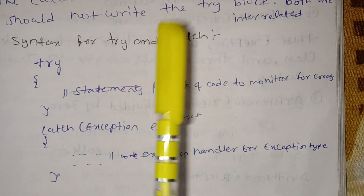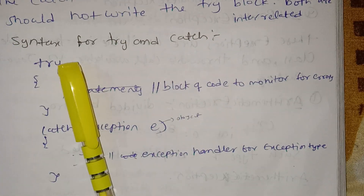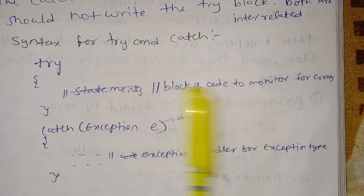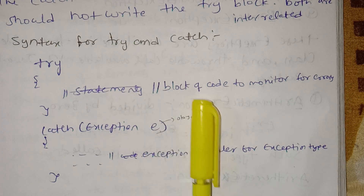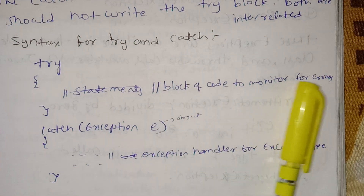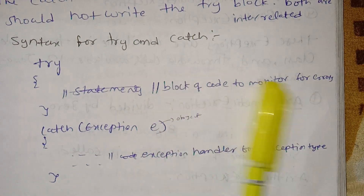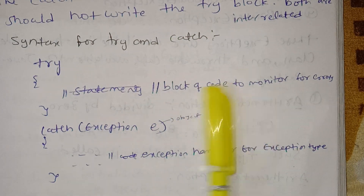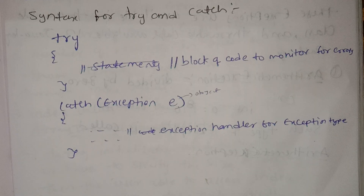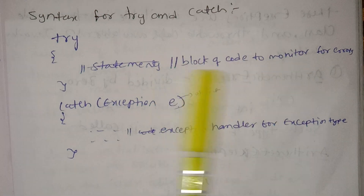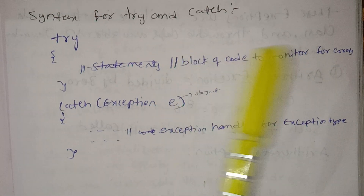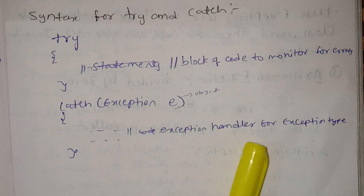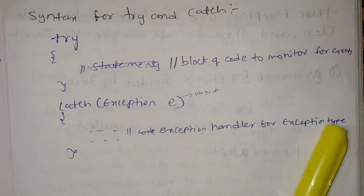The try and catch block keyword: the try block is a block of code to monitor for errors — we expect exceptions there — and the catch block is used to handle those exceptions.